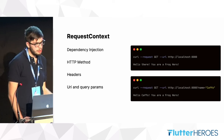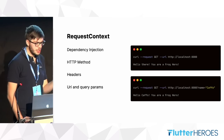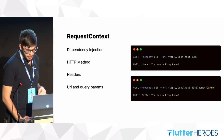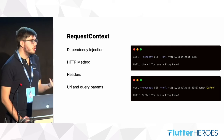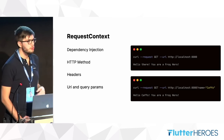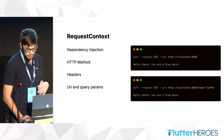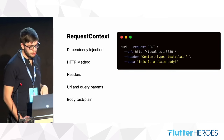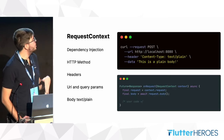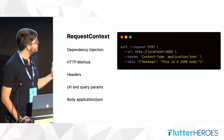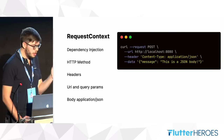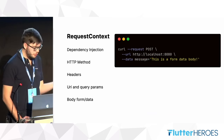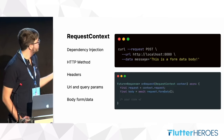The last thing we can retrieve from the request context is the body of the request. Based on the content type of the request, we use different methods. For a text/plain body, we use the .body method on the request. For an application/JSON content type, we use the .json method. And for form data, the formData method.